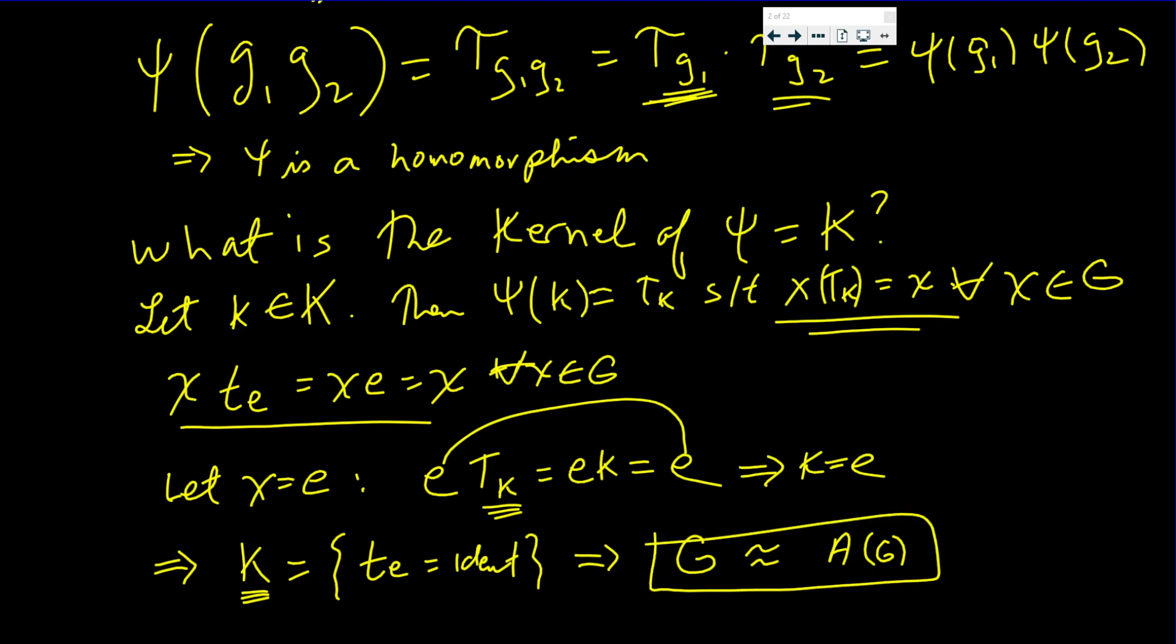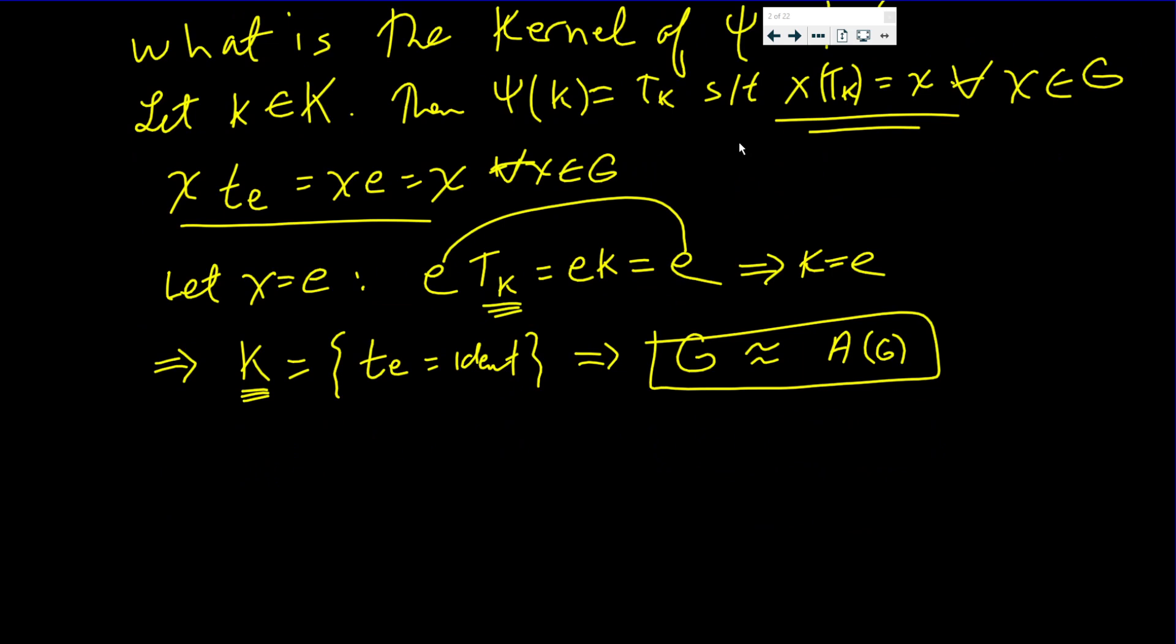If the kernel is e, and another reason that's true is because if there's a homomorphism between G and A(G), and you divide G by the kernel, so now you can say that they're isomorphic. But the kernel is just the element e, and G mod e is just G. So there's two arguments where we conclude this. And that completes this proof.